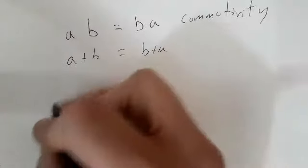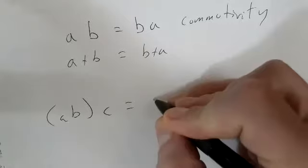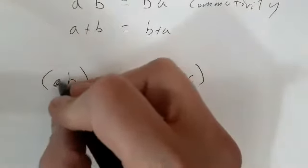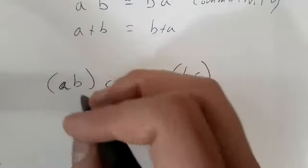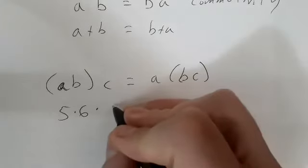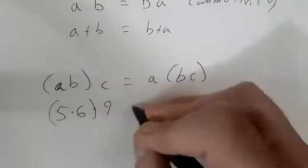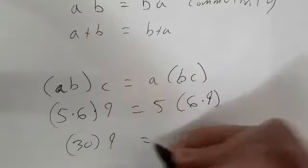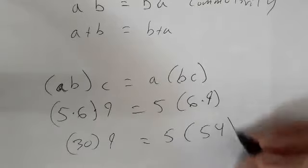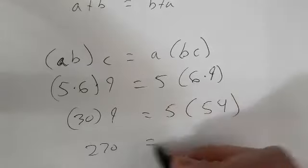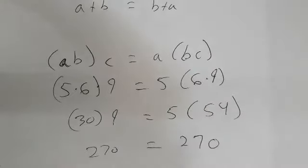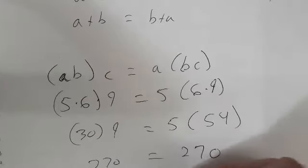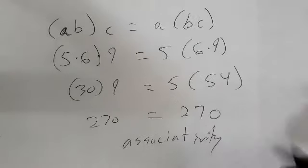The other property we like to talk about is who they're associating with. A and B are associating there, B and C are associating here, but it doesn't matter what order we multiply. For example, 5 times 6 times 9: 5 times 6 times 9 gives 30 times 9, or 5 times 54 — both equal 270. This is the associativity property.